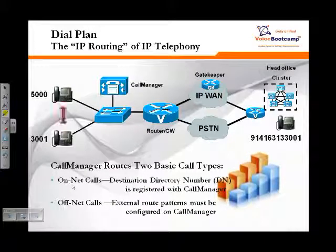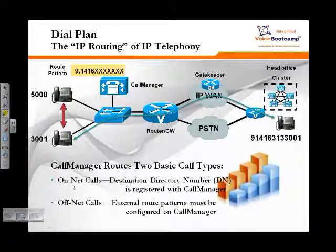The Dial Plan, which is basically an IP routing of IP telephony, consists of two basic call types: On-Net Calls and Off-Net Calls. On-Net Calls are calls that are destined for a number registered to Call Manager itself — for example, extensions, CTI route points, or voicemail ports. These are called On-Net.